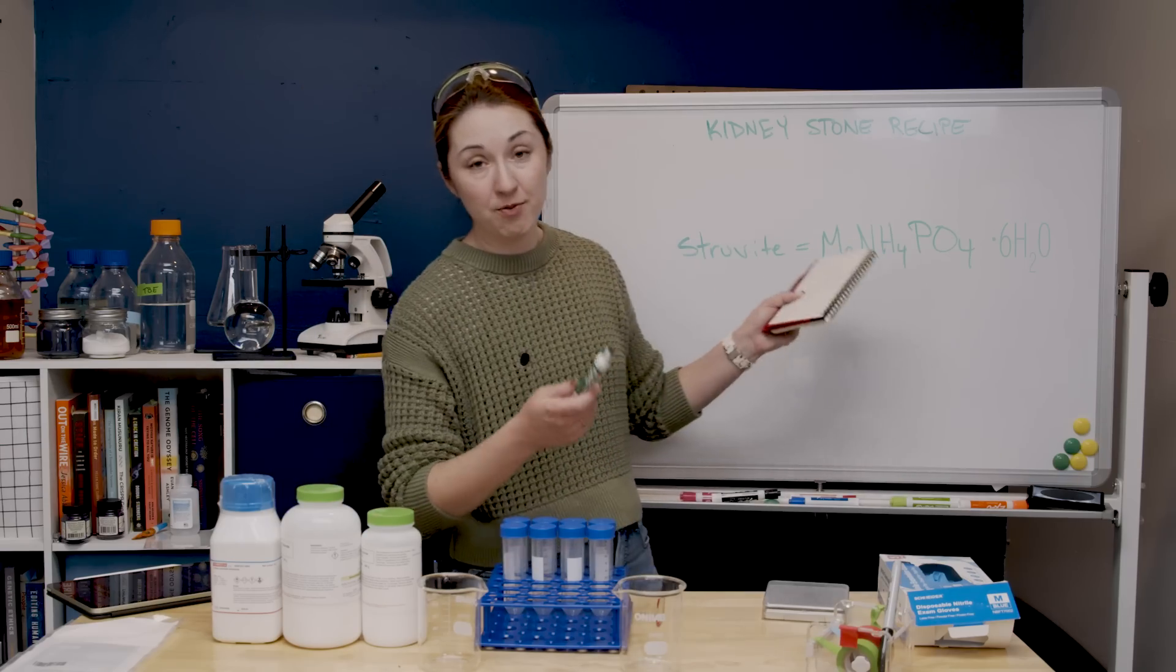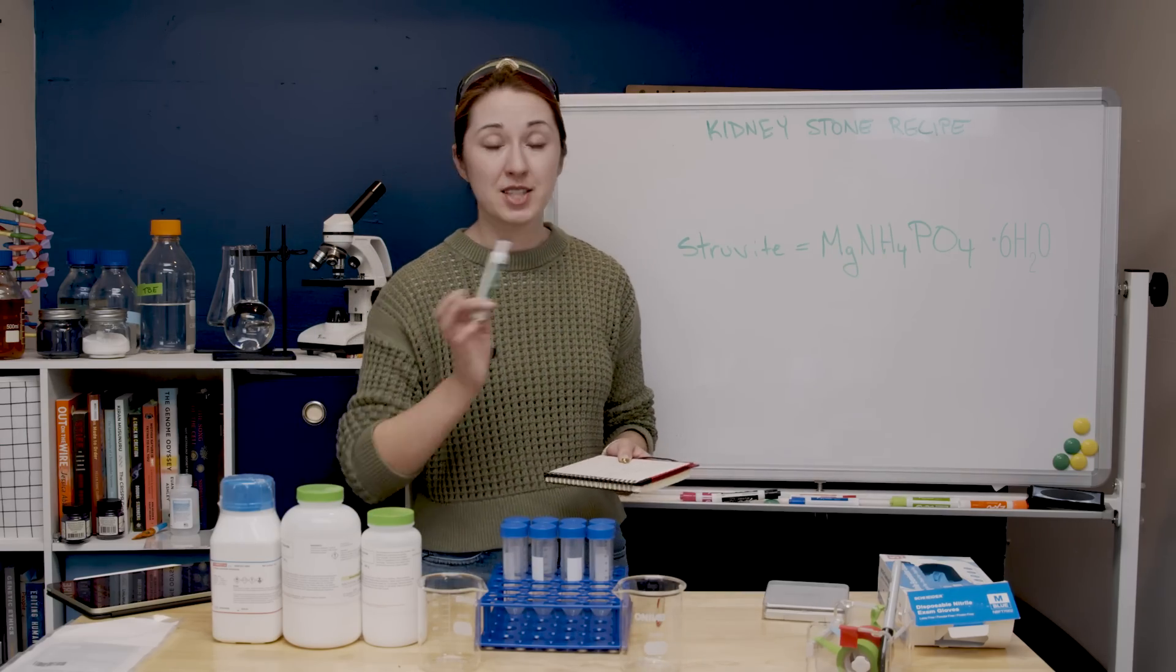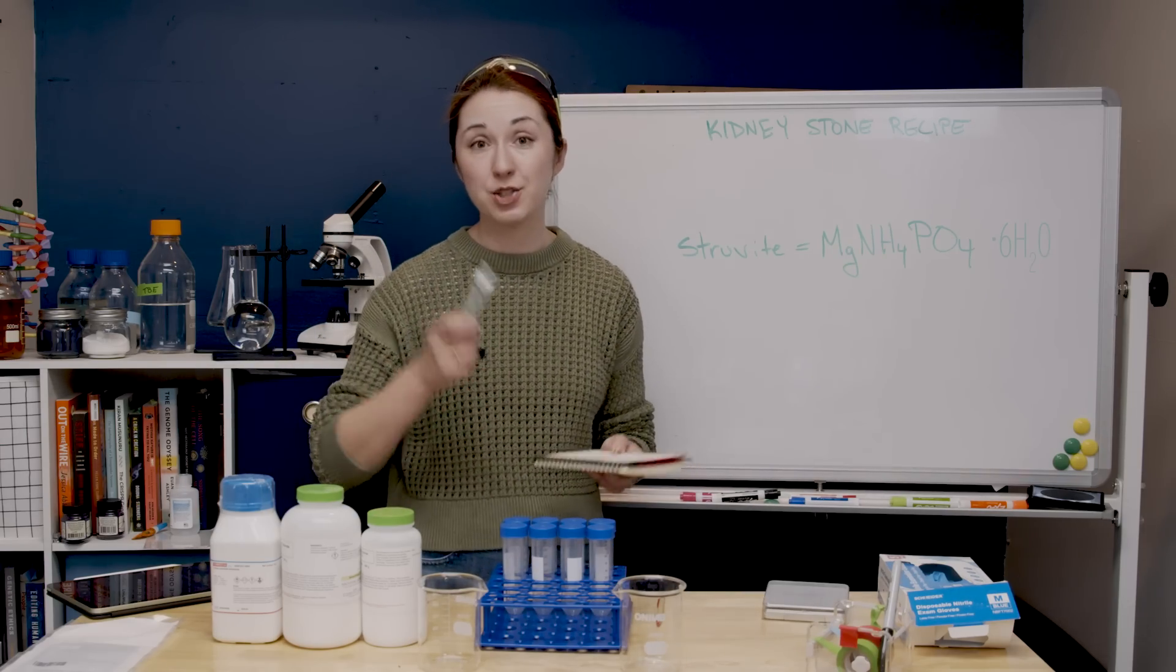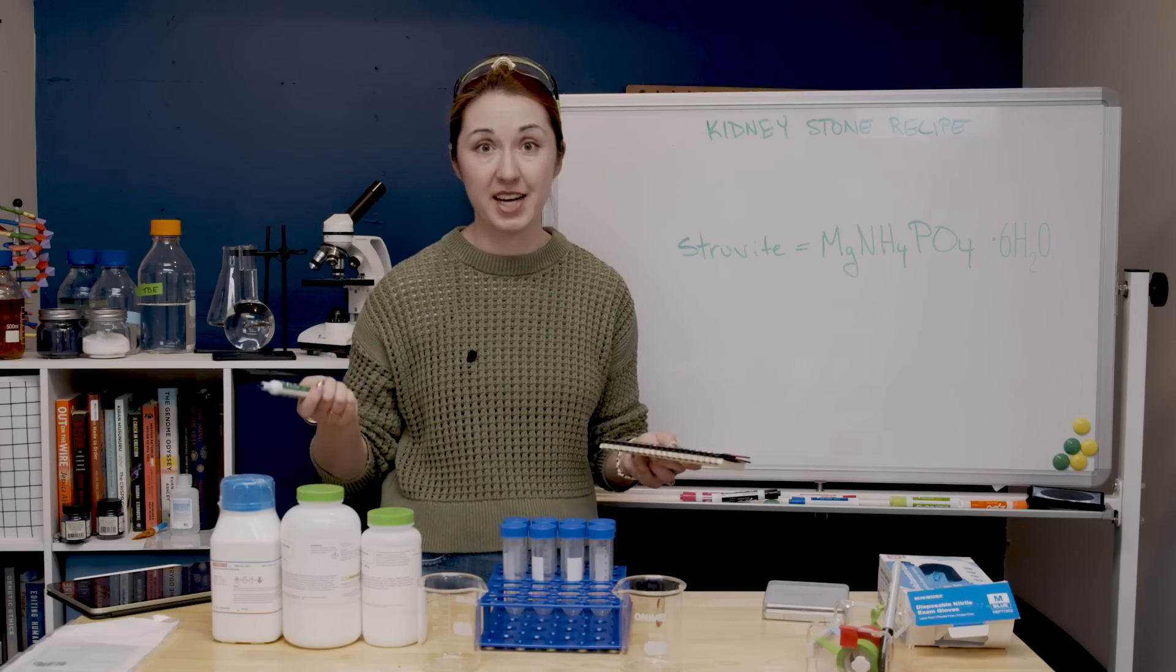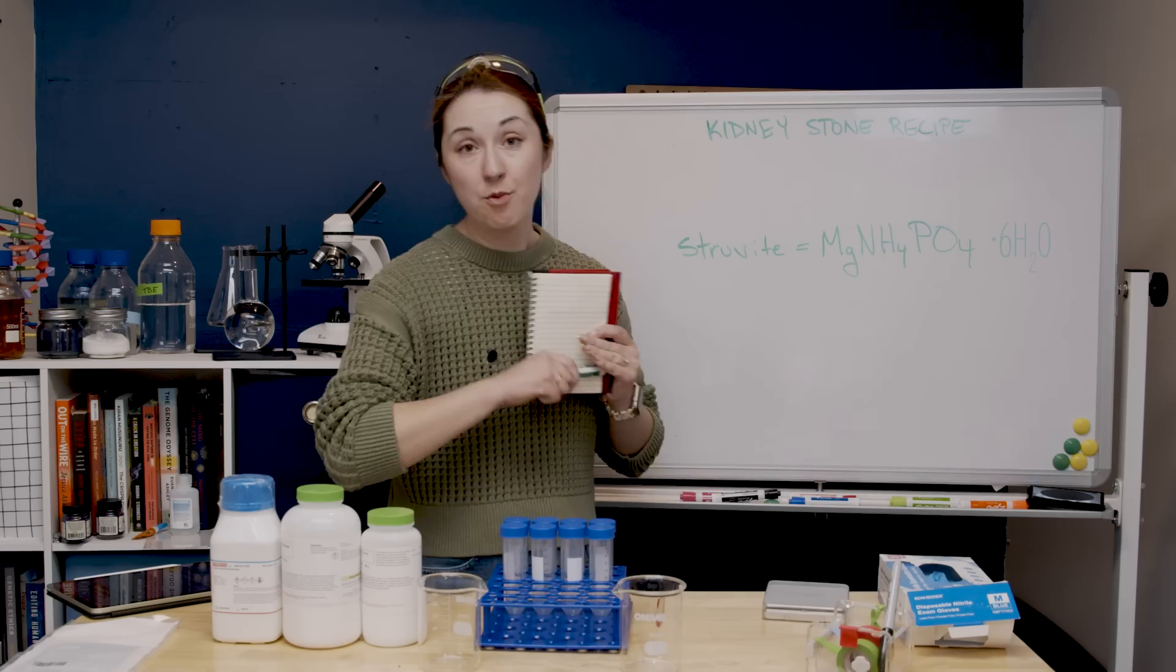Struvite is magnesium ammonium phosphate and it turns out you only get this kind of stone if you've had a UTI with a type of bacteria that turns urea into ammonia through an enzyme called urease. Biology is wild. We're not talking about that.